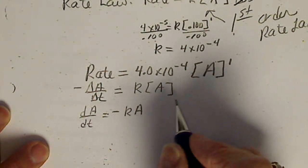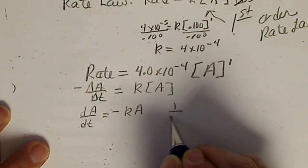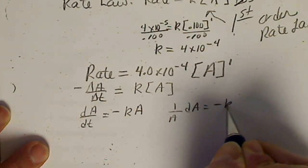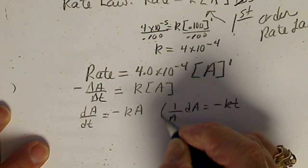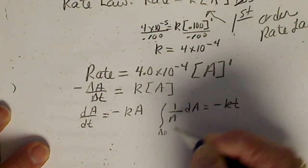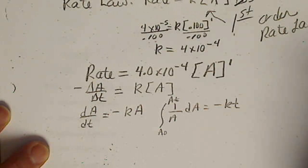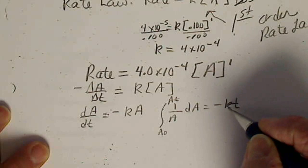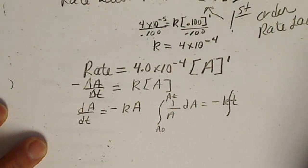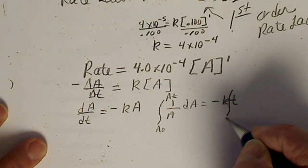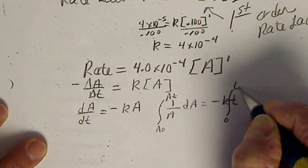So we could change this to dA/dt equals negative K times A. Rearrange these terms and have 1 over A dA equals negative K dt. And integrate this between the initial concentration and the final concentration.